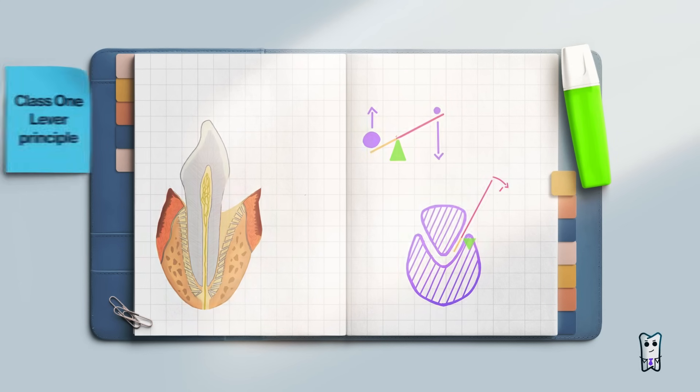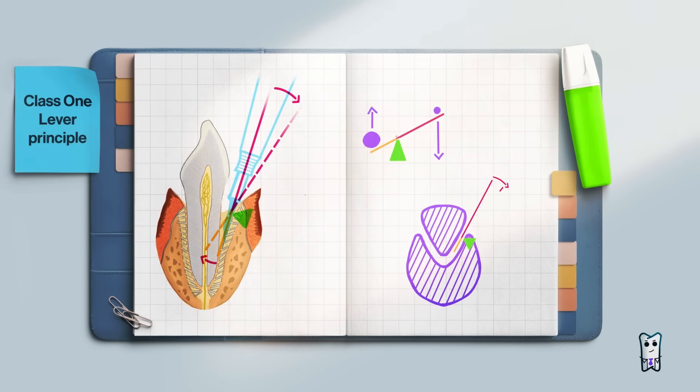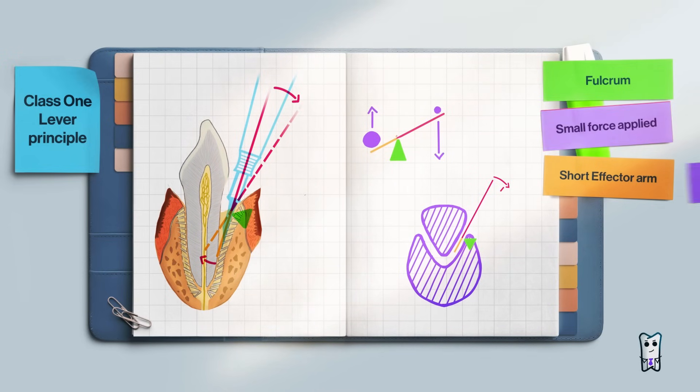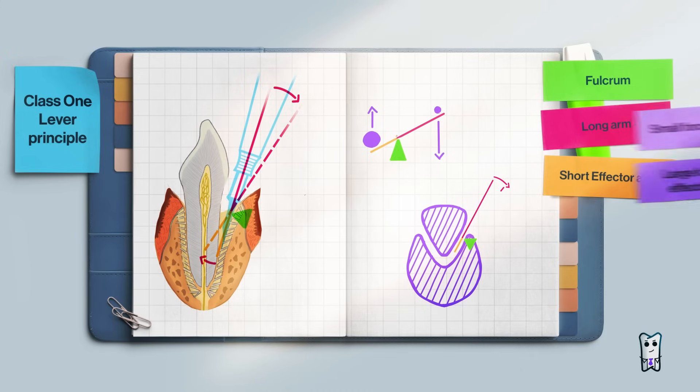Next is the principle of class one lever. A lever is composed of fulcrum, long arm, and short effector arm. Small force applied to the long arm can generate significantly larger force at the effector arm.